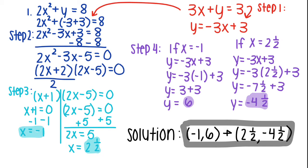So, if x equals negative 1, you get y equals negative 3x plus 3. Then you get y equals negative 3 times negative 1 plus 3. y equals 3 plus 3, and then you finally get y equals 6.